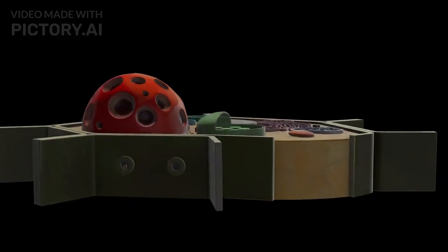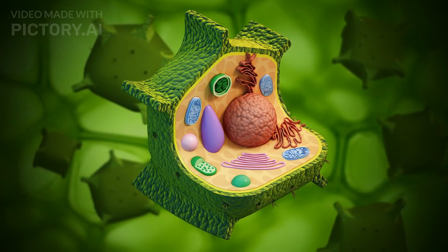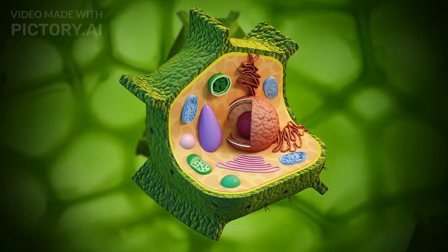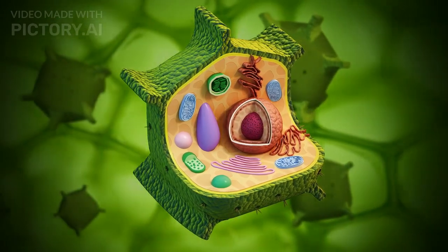In plant cells, the central vacuole is a storage center, holding water, nutrients, and waste. It also helps maintain turgor pressure, keeping the plant upright.